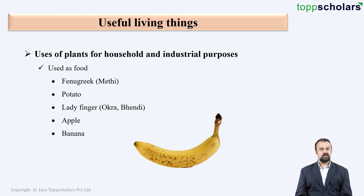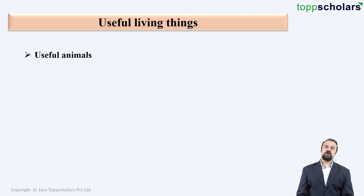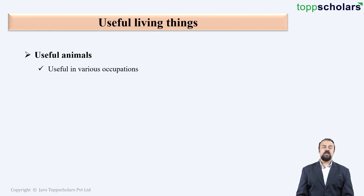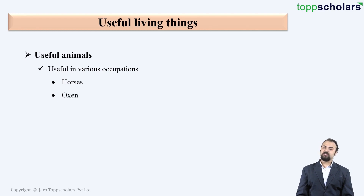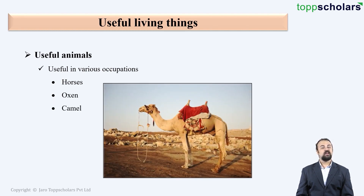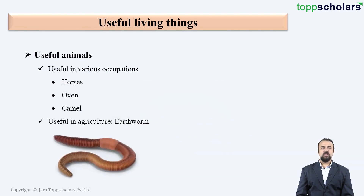Now students, let us talk about useful animals in terms of various occupations. If you think about transport, what animals come to your mind? We have animals like horses, then we have oxen, and then we have camel. These are a few examples of animals which are used for transport.